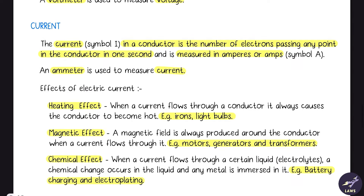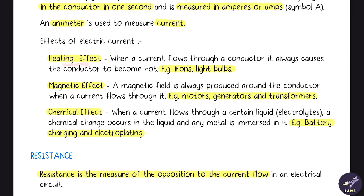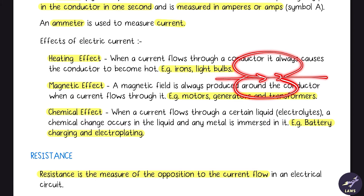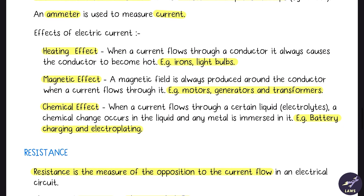There are different effects of electric current. The first is the heating effect — when current flows through a conductor, it causes it to become hot; examples are irons and light bulbs. Then we have the magnetic effect: whenever a current passes through a conductor a magnetic field is generated, and motors, generators, and transformers make use of this. Then we have the chemical effect, as in the case of batteries.